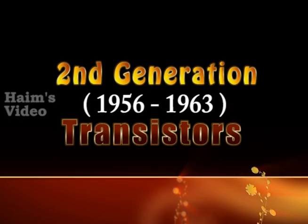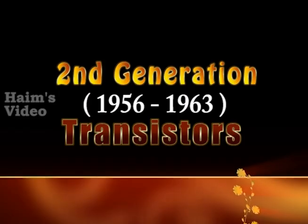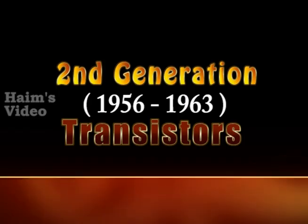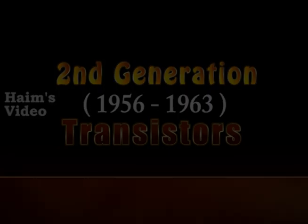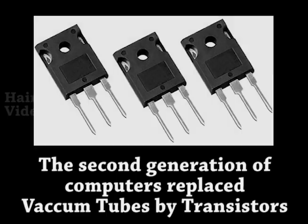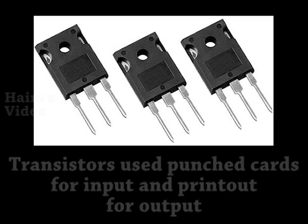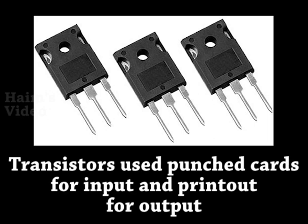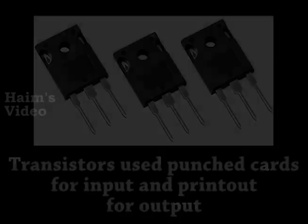2nd Generation: From 1956 to 1963 — Transistors. The second generation of computers replaced vacuum tubes with transistors. Transistors used punched cards for input and printouts for output.